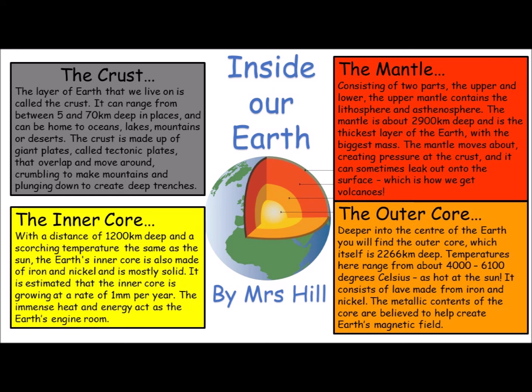The outer core: deeper into the centre of the earth, you will find the outer core, which itself is 2,266 kilometres deep. Temperatures here range from about 4,000 to 6,100 degrees Celsius — as hot as the sun. It consists of lava made from iron and nickel. The metallic contents of the core are believed to have helped create Earth's magnetic field. And finally, the inner core: with a distance of 1,200 kilometres deep and a scorching temperature the same as the sun, the Earth's inner core is also made from iron and nickel and is mostly solid. It is estimated that the inner core is growing at a rate of one millimetre per year. The immense heat and energy act as the Earth's engine room. So there is my example — with one little mistake in there, which I think you might have spotted as I did as I was reading it. Hopefully you'll be reading yours as you go along as well.